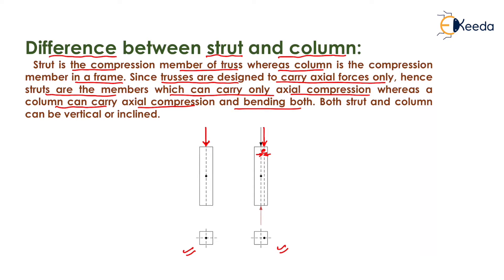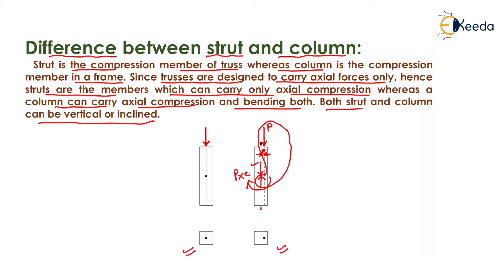If the load is acting at some eccentricity, at the centroid there will be an axial compression force and due to its equal and opposite force it will form a couple, which will create bending of magnitude P times E, where P is the value of the load. So the column undergoes axial compression as well as bending both. Both strut and column can be vertical or inclined — we cannot say that a column is only vertical and a strut is only inclined. The basic difference is that a strut carries only axial compression whereas a column carries axial compression and bending both.